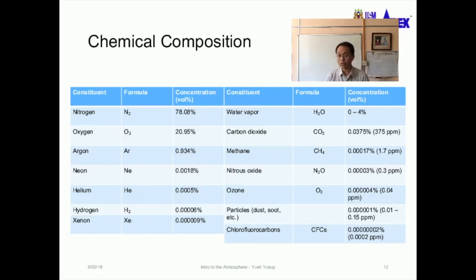There's also particles, dust, soot, etc. in the atmosphere at 0.15 ppm, and also the chlorofluorocarbons at 0.002 ppm. So that is the general description of the chemical composition of the atmosphere.